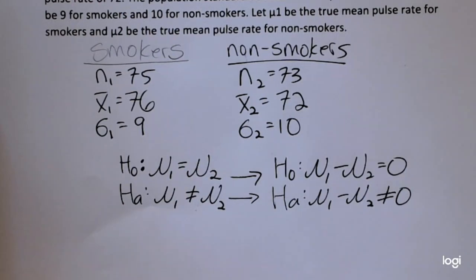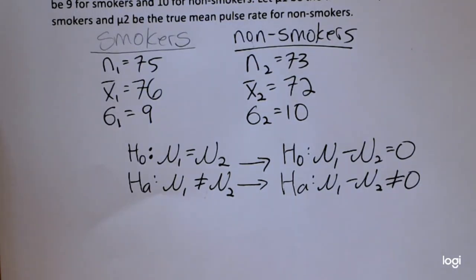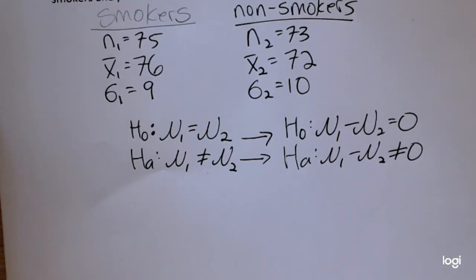Remember, the case of equality always goes in the null. When testing between two population means and the standard deviations are known, we're going to use a two-sample z-test for independent samples — the same rule as for a single-sample hypothesis test. When sigma, the population standard deviation, is known, we use the z-distribution. Since we know both population standard deviations, it is going to be a z-test, and the standardized test statistic will follow the z-distribution.